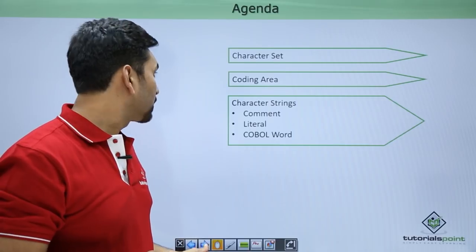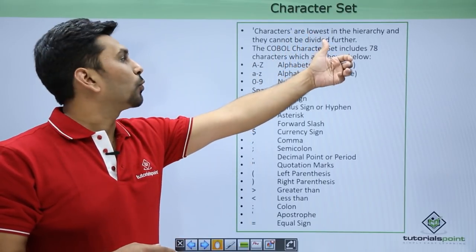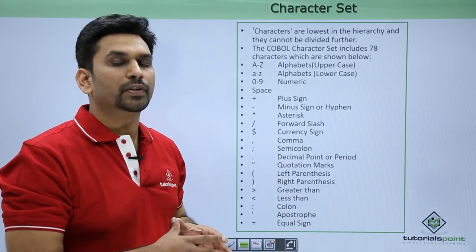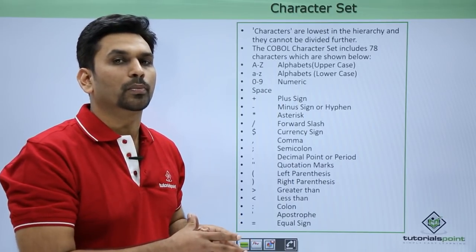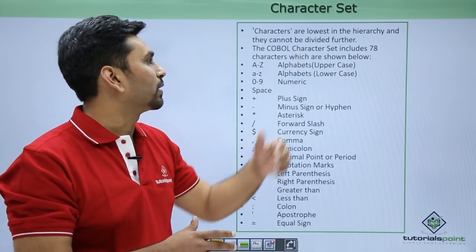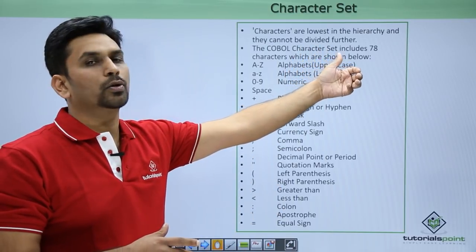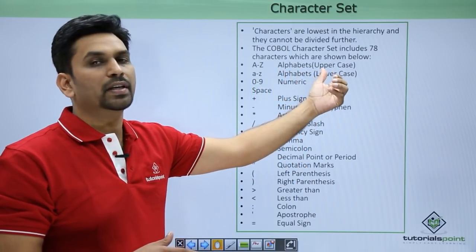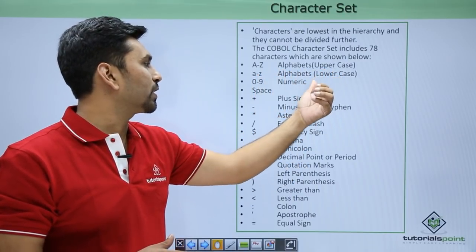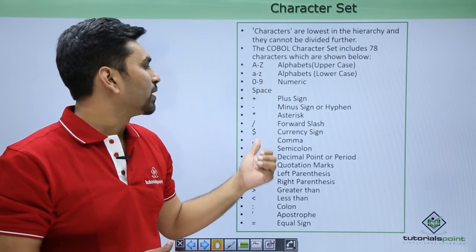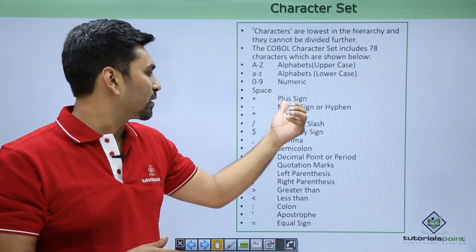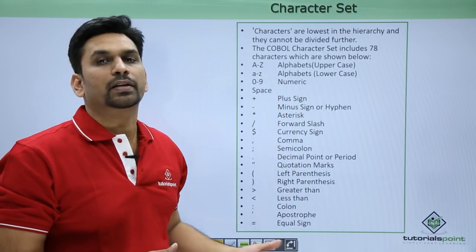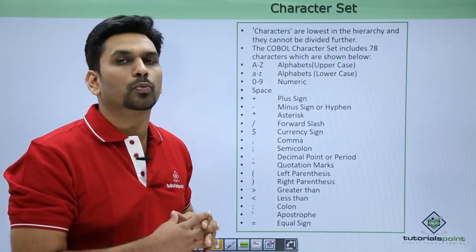First we will start with character set. Characters are the lowest in the hierarchy and they cannot be divided further. In the programming structure, characters come at the bottom. The COBOL character set includes 78 characters: A to Z in uppercase and lowercase, numbers 0 to 9, space, and special characters like plus sign, minus sign, asterisk, comma, and semicolon. These are the valid character sets which can be used while doing COBOL programming.